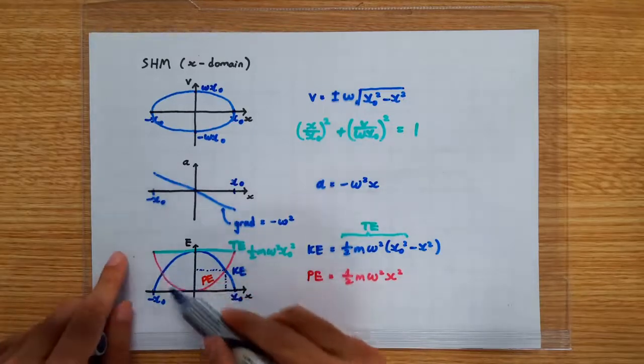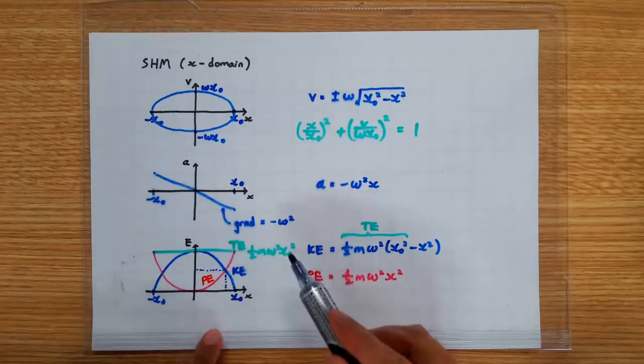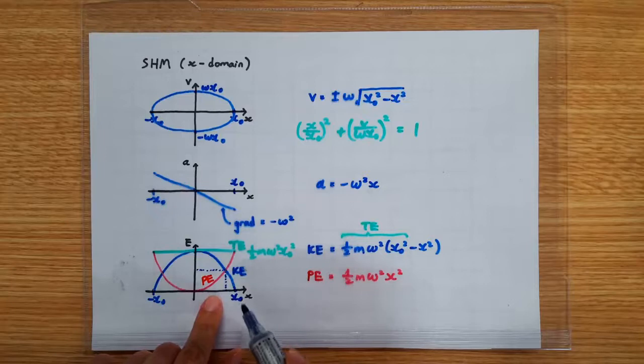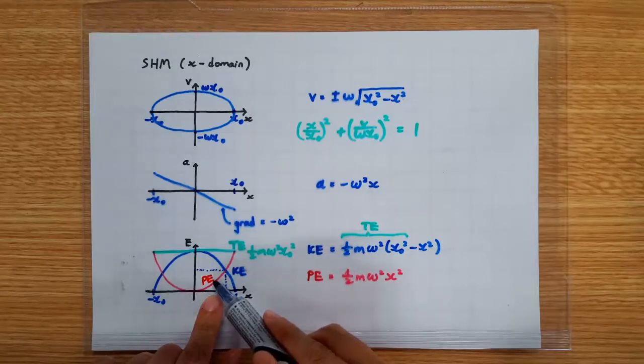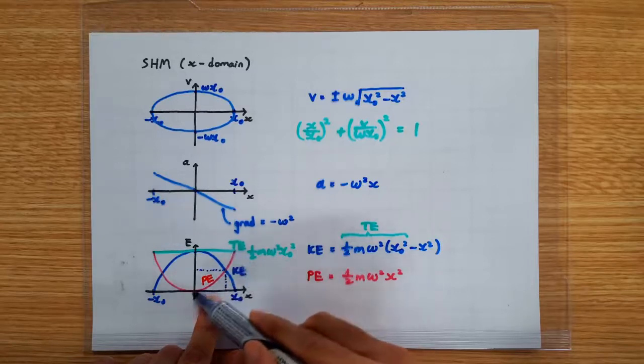Also make sure the graph you draw looks quadratic. Meaning at half the amplitude, you should get one quarter the energy. Because that's what the quadratic curve is all about.